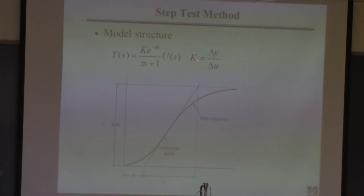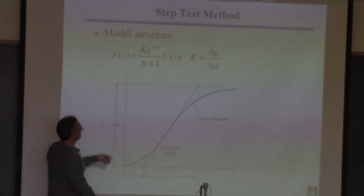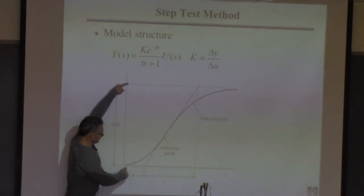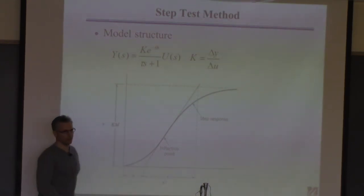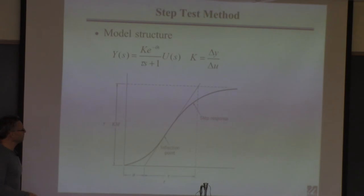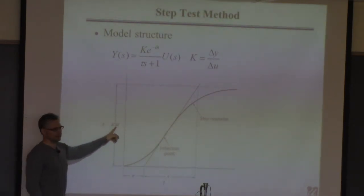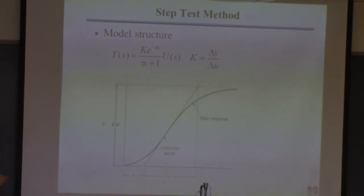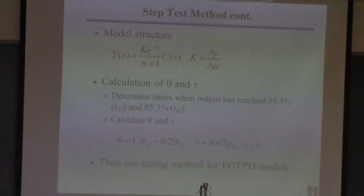The k, you might recall, is always the same. It's the amount the output change divided by the amount you change the input. So here's the amount the output changed. It started here and it ended up here. That's delta y. The amount the input, the amount you change the input was m. You do a step change of magnitude m. So if you divide km by m, k is the process gain. So now you need ways to find the theta and the tau.